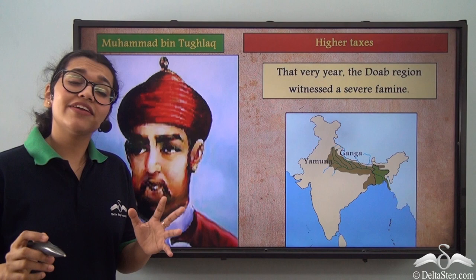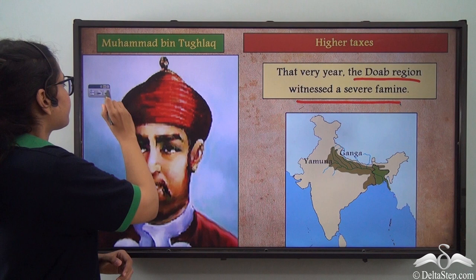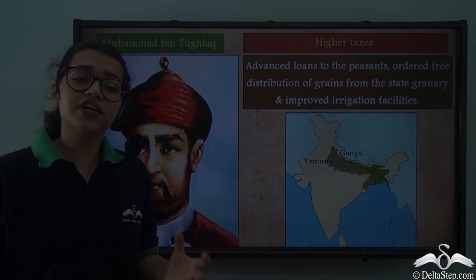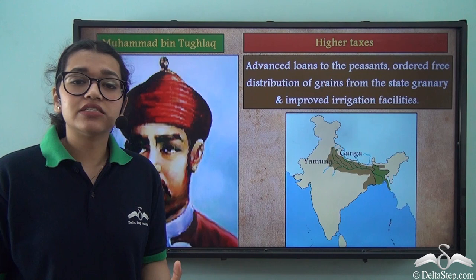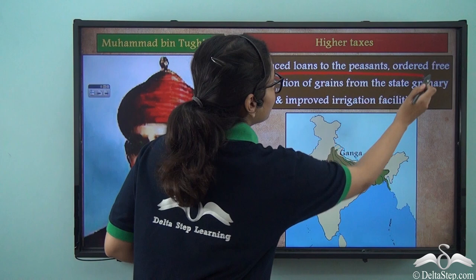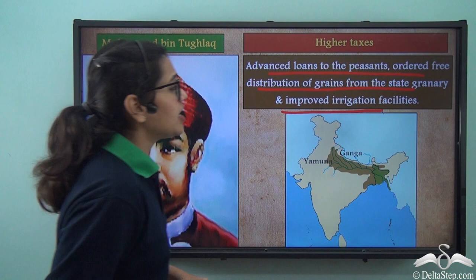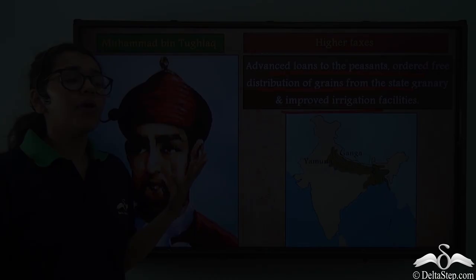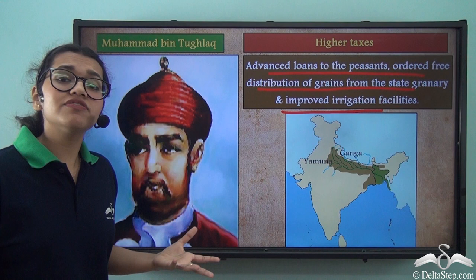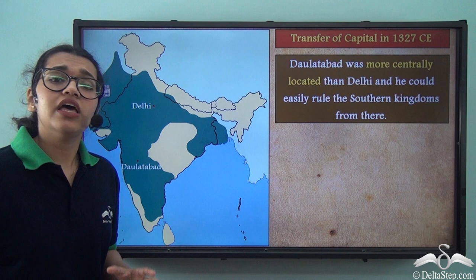However, that very same year, the Doab region witnessed a severe famine. The farmers, already facing starvation, could not pay these taxes and refused to do so. When Muhammad bin Tughlaq learned of this, he advanced loans to the peasants, ordered free distribution of grains from the state, and improved irrigation facilities. But this help reached the farmers very late, and many people had already died of starvation. His motives were pure; however, his execution was flawed.